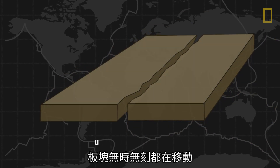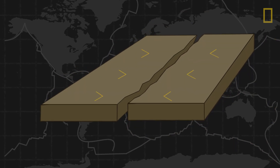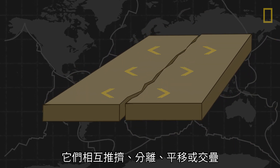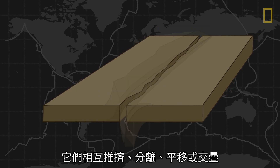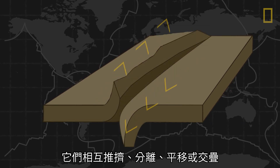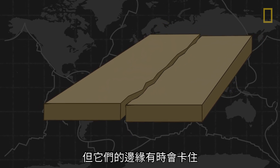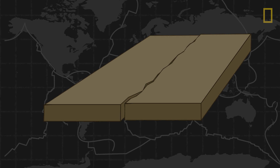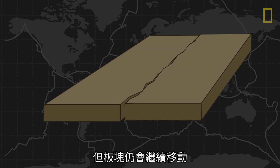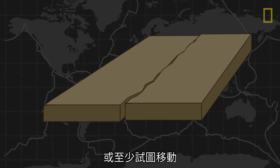Tectonic plates are constantly moving either against, away, along, or underneath each other. But sometimes their edges may catch and stick. The plates, however, continue to move, or at least attempt to.